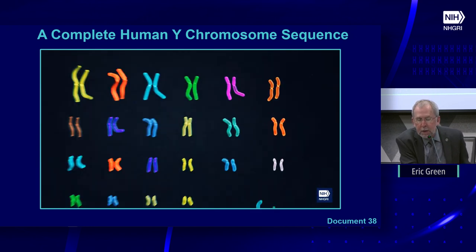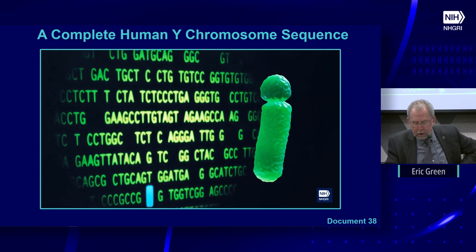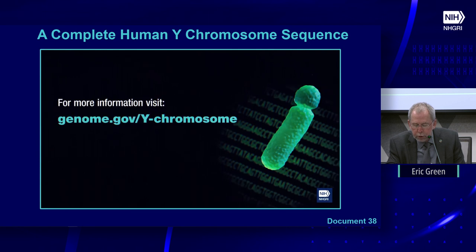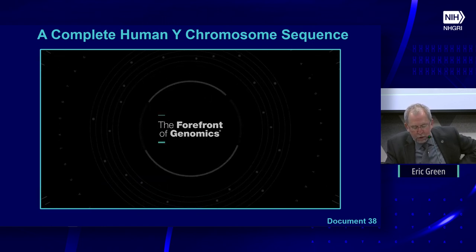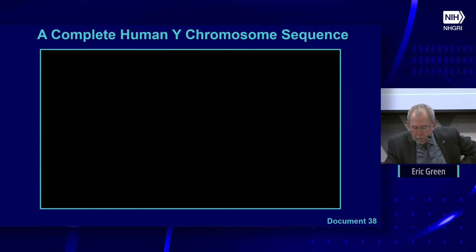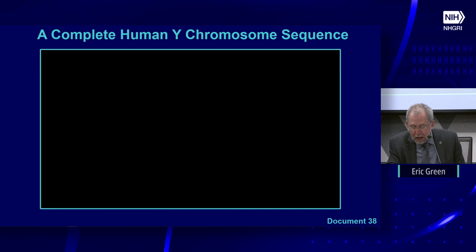The NHGRI-funded Telomere-to-Telomere (T2T) Consortium recently completed the first gapless sequence of the human Y chromosome, published in Nature at the end of August. This complements the consortium's previous achievement of completing sequences for all other 23 chromosomes, meaning we now have a complete sequence for every human chromosome. Previously, more than 50% of the Y chromosome was unsequenced due to its highly repetitive DNA regions; completion was made possible by new sequencing technologies and analysis methods developed by the consortium. The achievement garnered significant media attention, with coverage in Science, CNN, New Scientist, Reuters, and others.